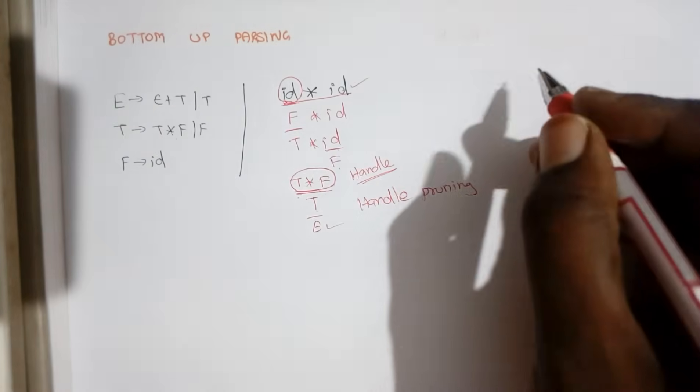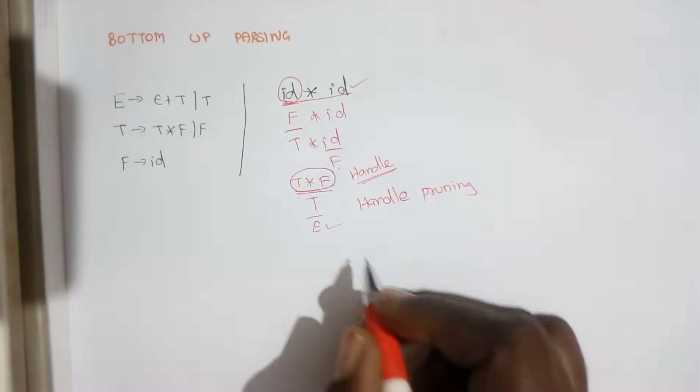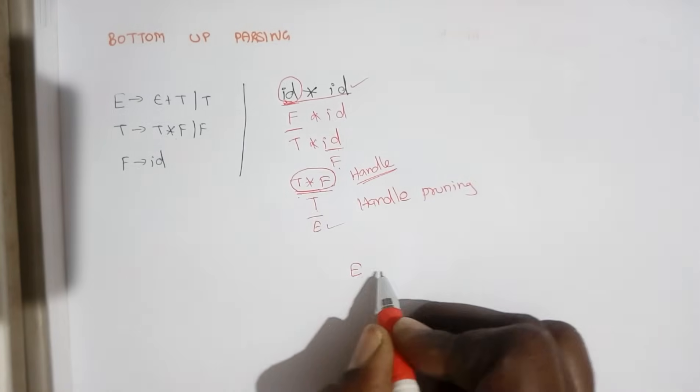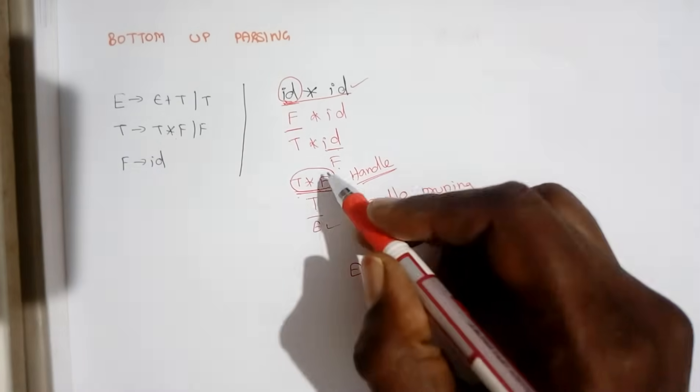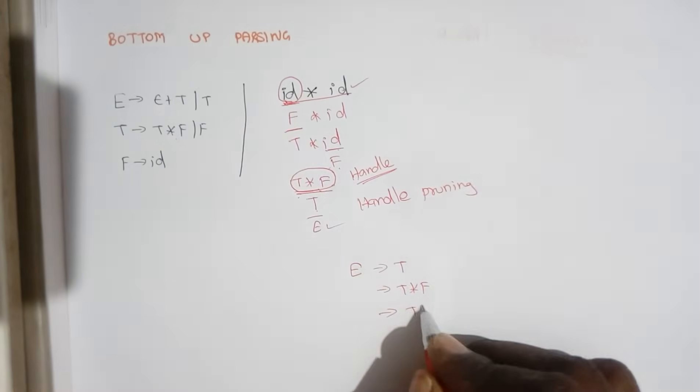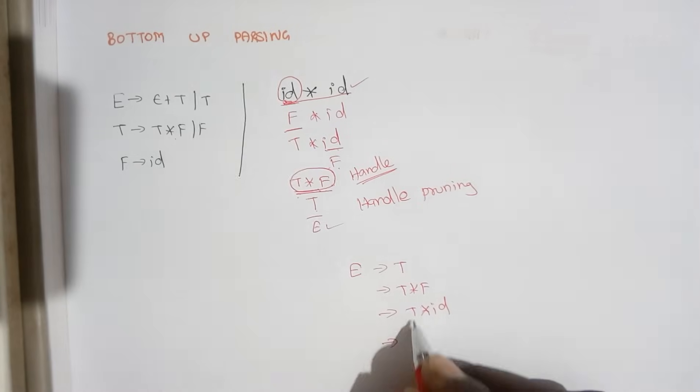like when you make it as a derivation, first we start with E, E tends to T, T tends to T star F and this F is made to id and this T to F,